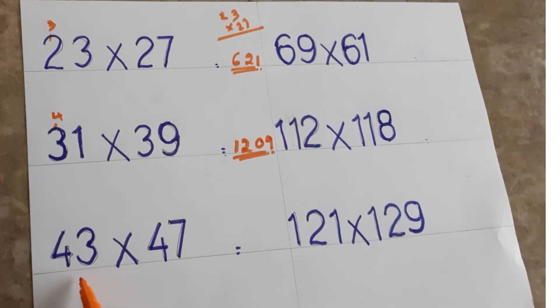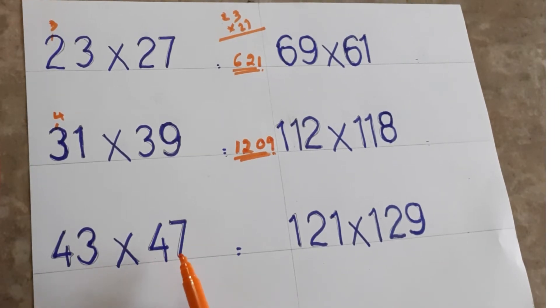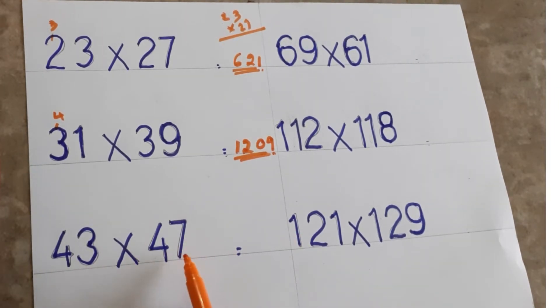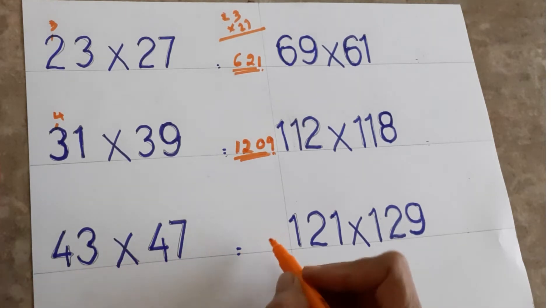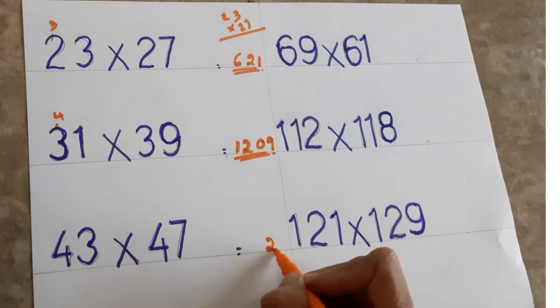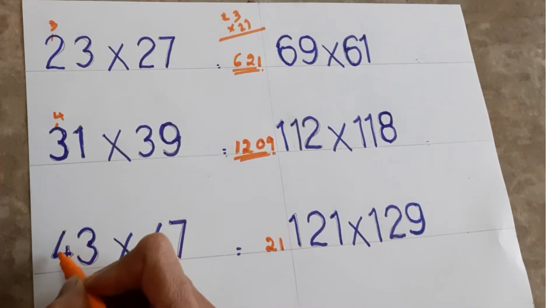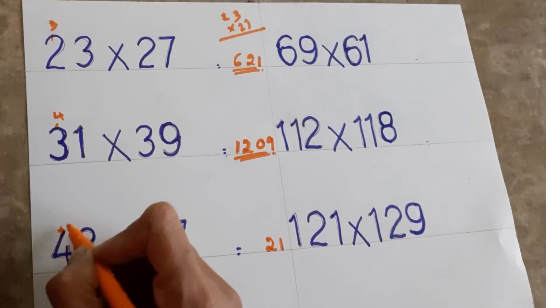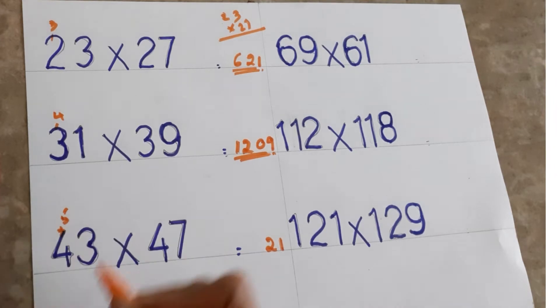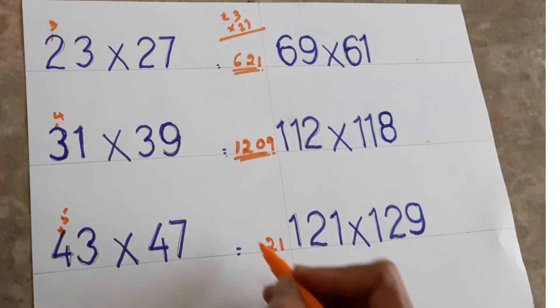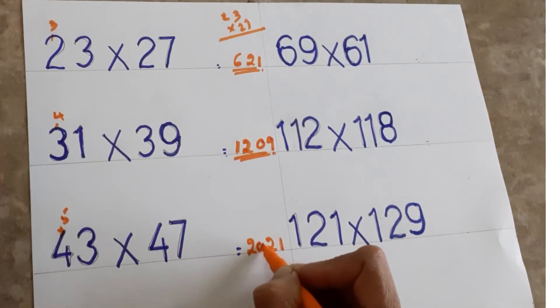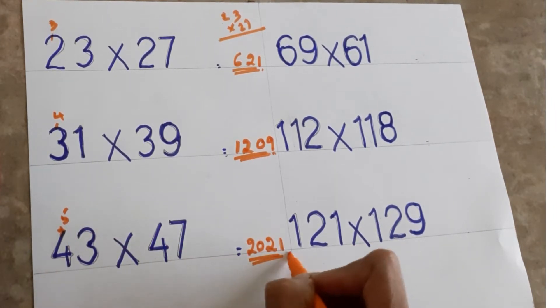Next: 43×47. Look at the units place — seven and three. Seven threes are 21, write 21. Then four — after four the next number is five. Four fives are 20. So the answer is 2021.